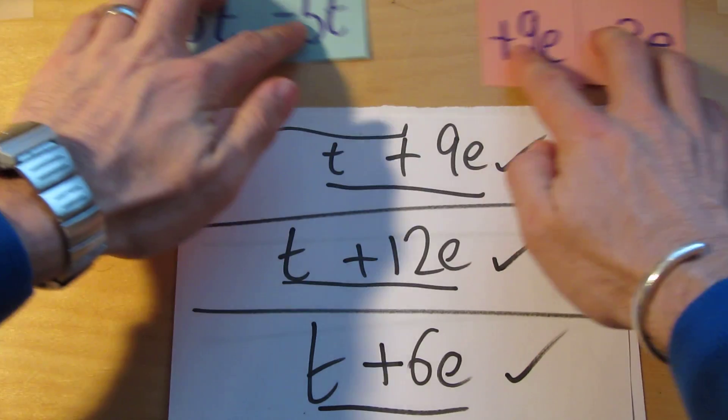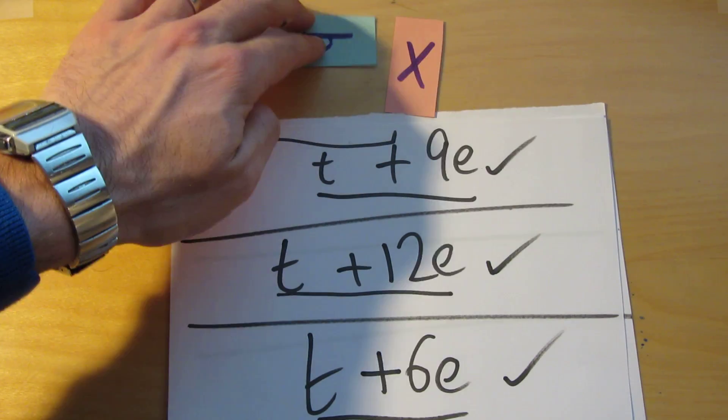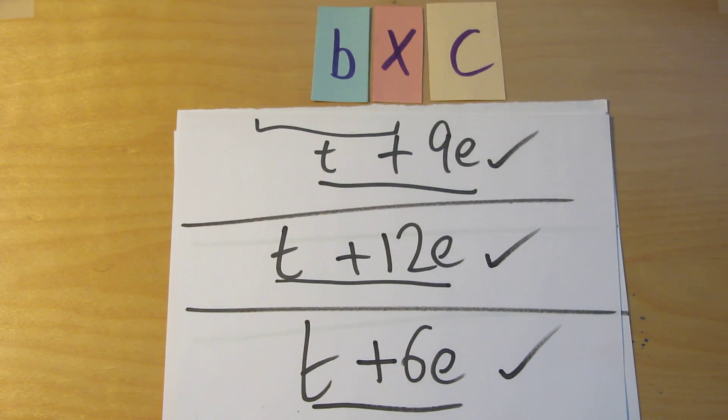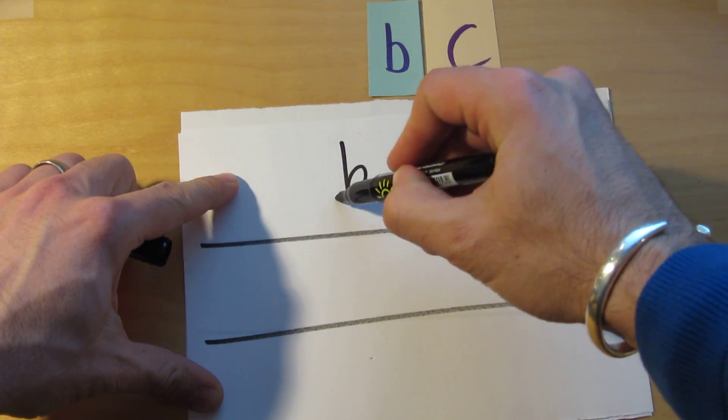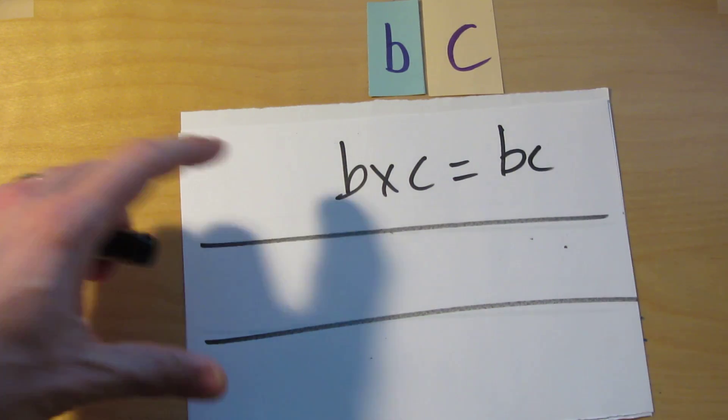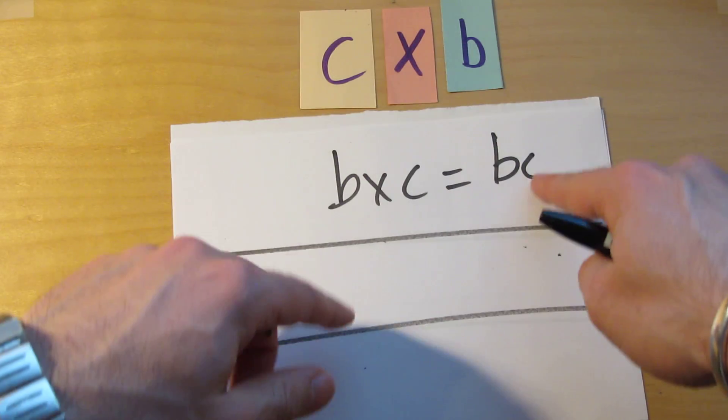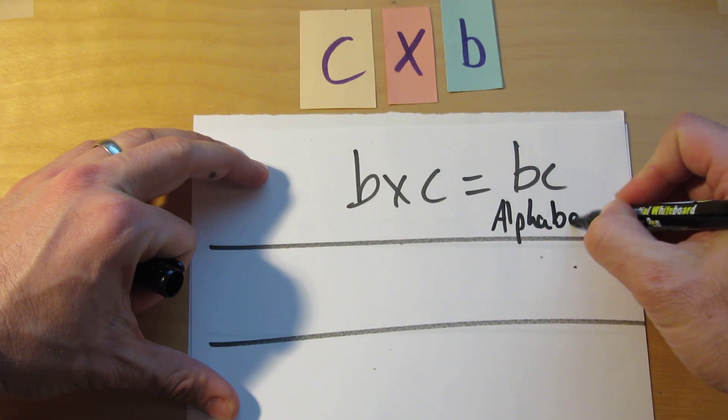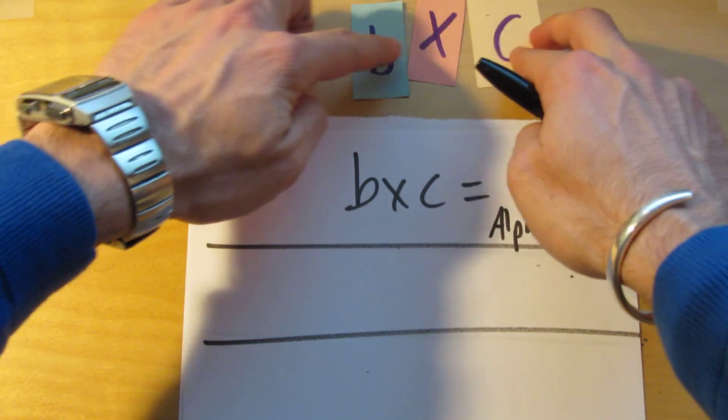Okay so that was adding and taking away two different variables. But now let's have a look at what happens when you're multiplying. So b times c for example. b times c just simplifies to bc. That was really easy. b times c simplifies to bc. In fact c times b you would also say simplifies to bc because you put them in alphabetical order.